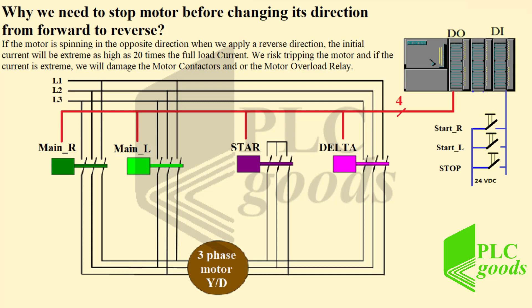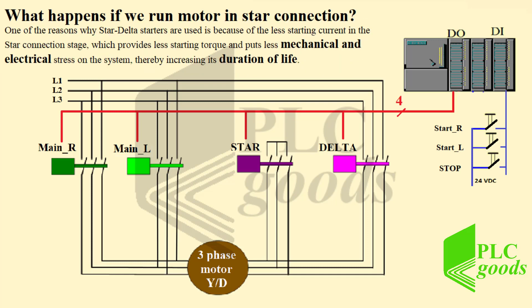What happens if we run motor in a star connection? One of the reasons why star delta starters are used is because of the less starting current in the star connection stage, which provides less starting torque and puts less mechanical and electrical stress on the system, thereby increasing its duration of life.